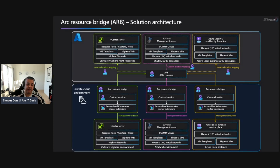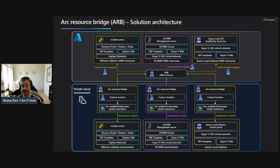Here's an architecture of how Azure Arc resource bridge looks. Azure Arc resource bridge is a key component that allows you to manage on-premises cloud infrastructure and supports private clouds including VMware vSphere, SCVMM, and Azure Local. It acts as a local appliance VM that connects your private cloud to Azure, enabling Azure to project and manage those on-premises resources.